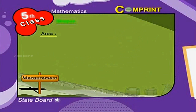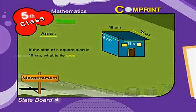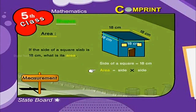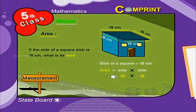Let us see an example. If the side of a square slab is 18 centimeters, what is its area? Solution: side of a square is equal to 18 centimeters. The formula for area is side into side. Applying the values: 18 into 18 centimeters. We get the product 324 square centimeters.